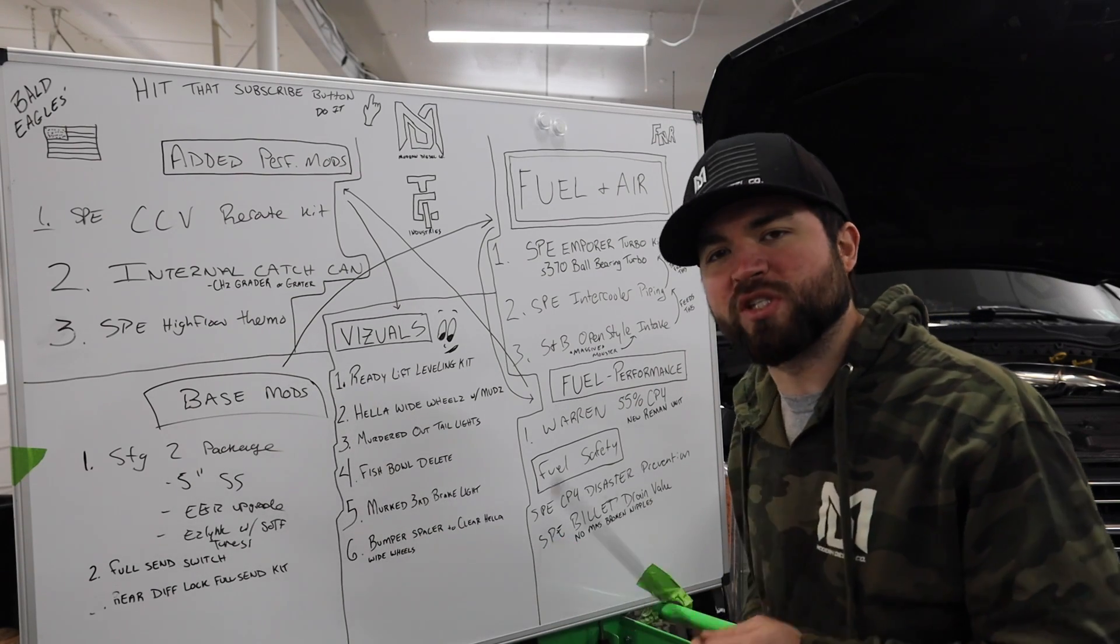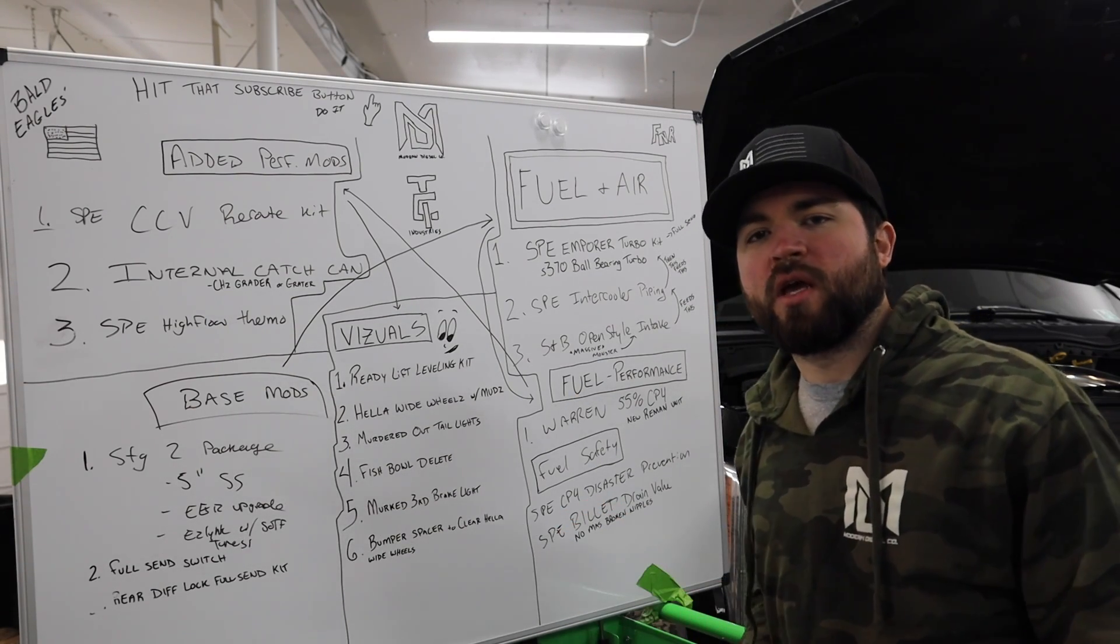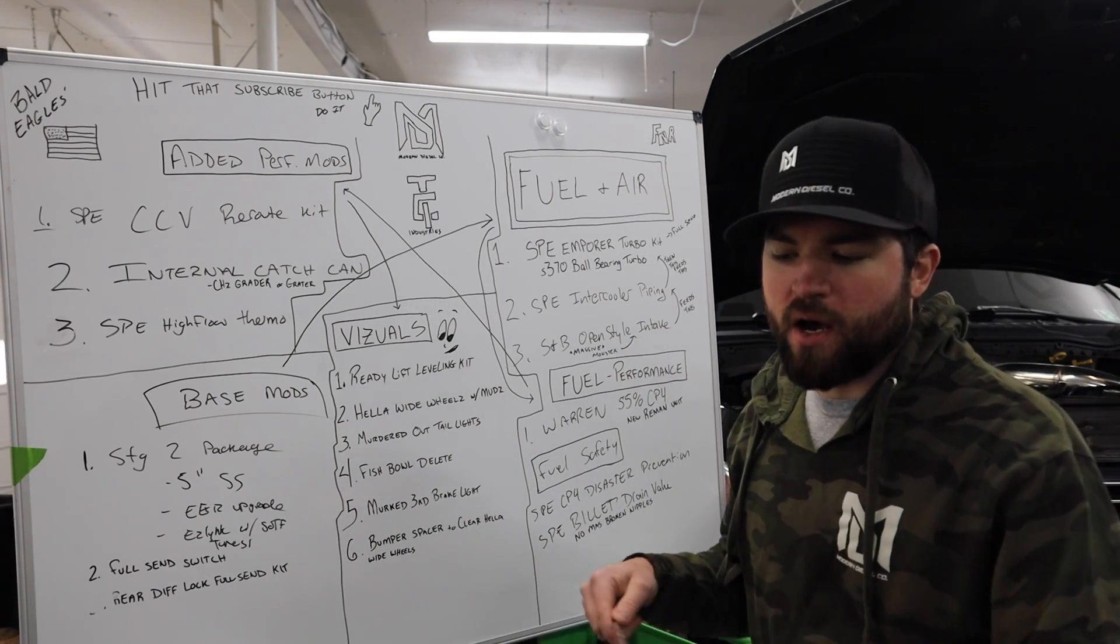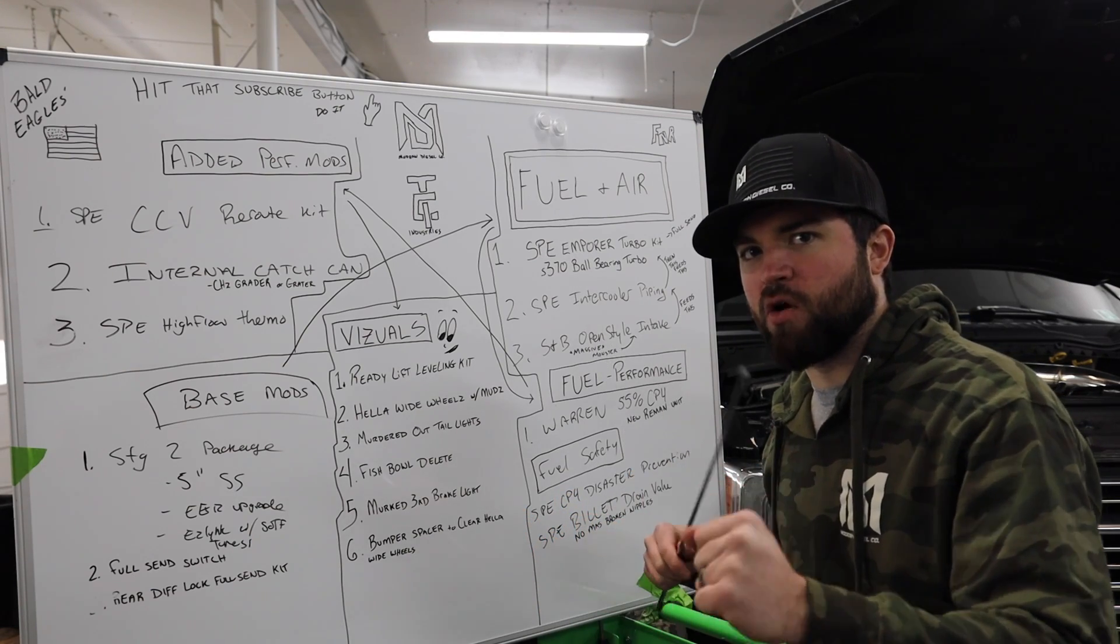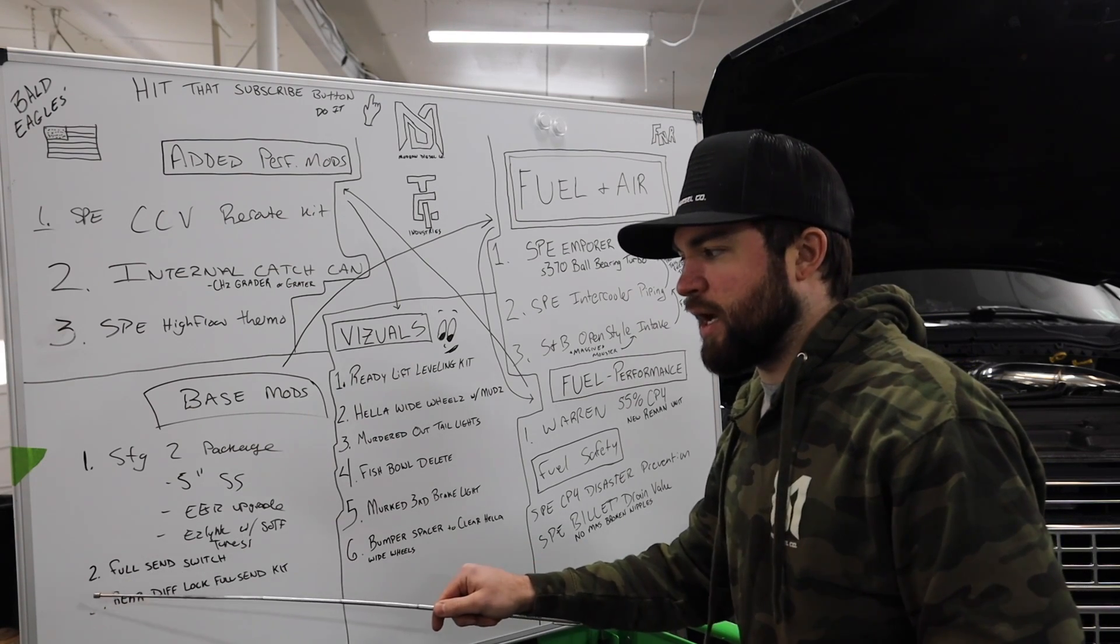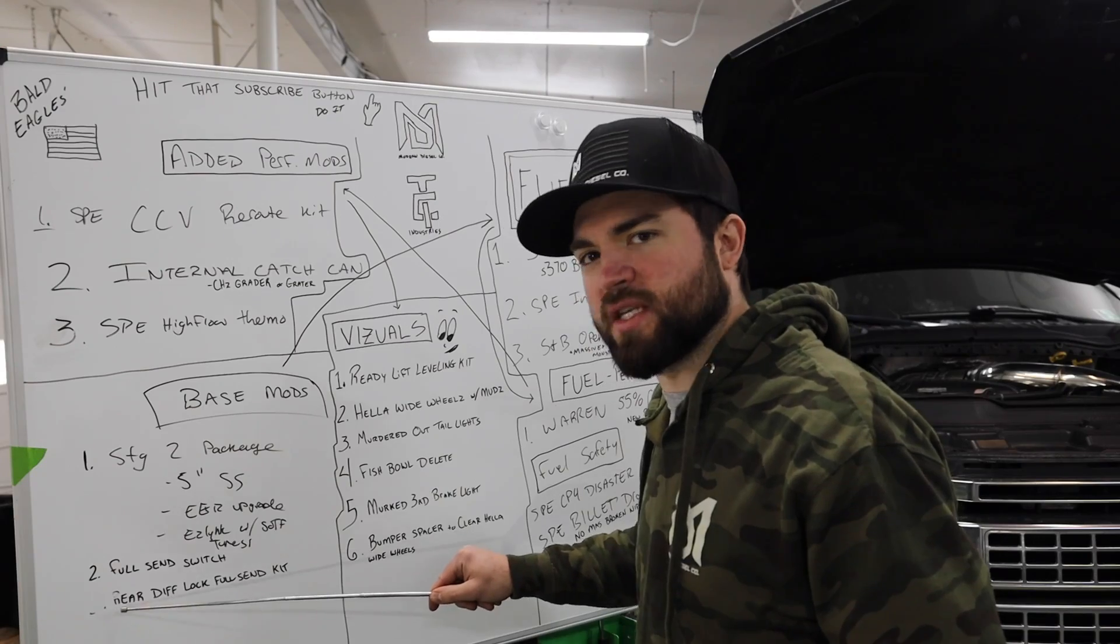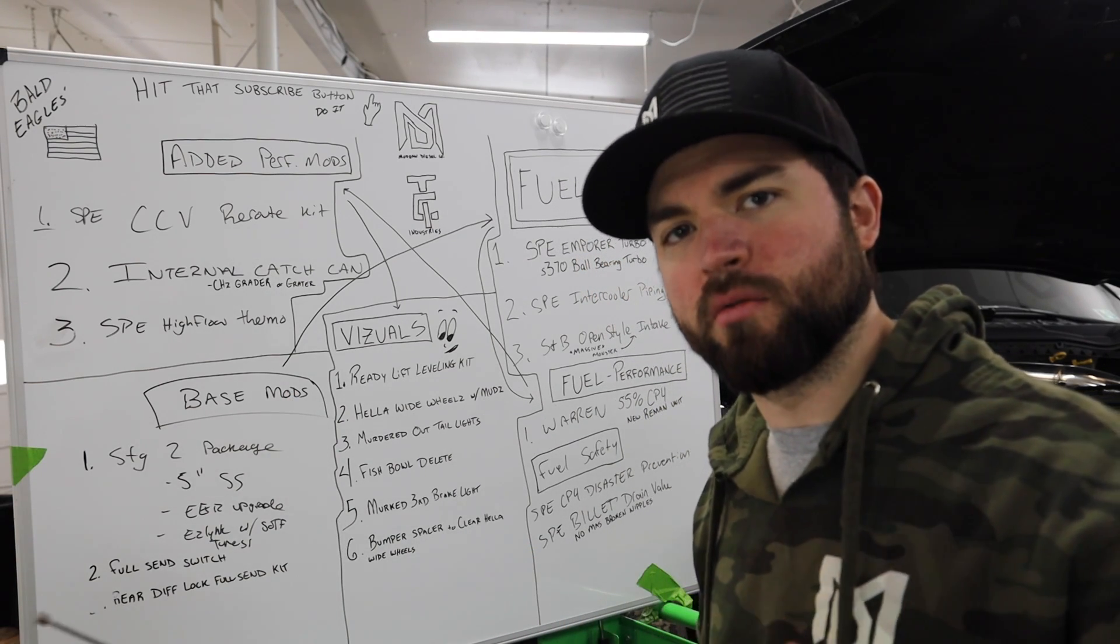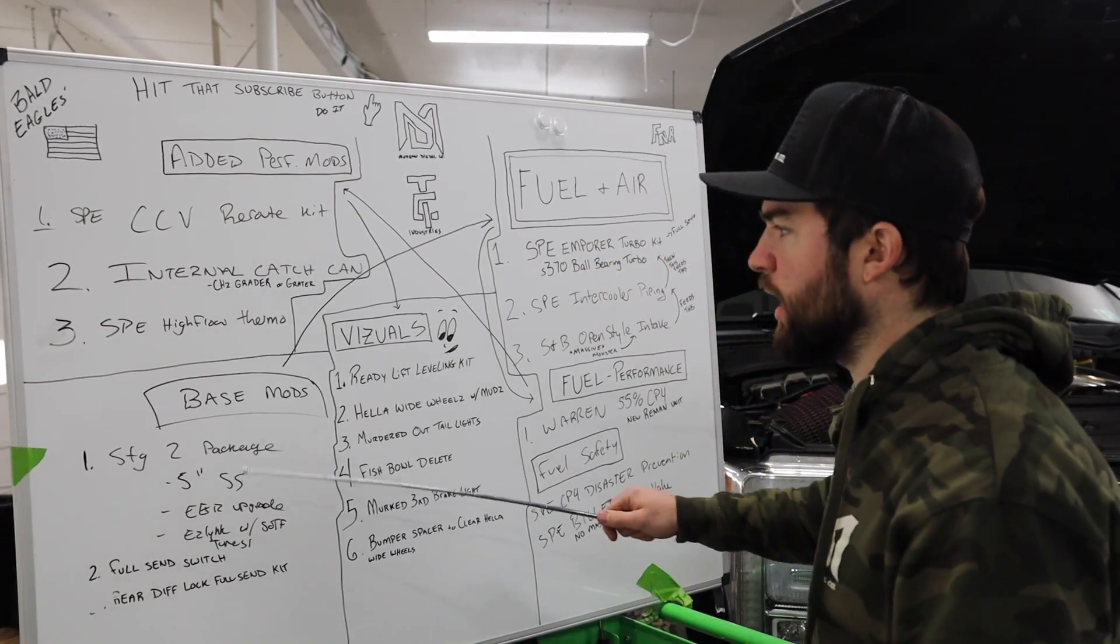On top of the stage two kit, I am running a full send switch. Now what the heck is full send switch? A full send switch is where I took my ABS traction control and I wired it to my upfitter switch via a fuse tap situation in the fuse box. Video also on that full send switch. Number two, number three—I rubbed off the three so you can't see it, but three is right there—rear diff lock full send kit. This is an SPE modification where it keeps your rear differential locked past 20 miles an hour. Now I'm not going to explain all these deals, I'm just telling you what exactly is all on the truck. Okay, so moving from the base mods, we are going to follow the arrow on the chart over to fuel and air, the fuel and air section.